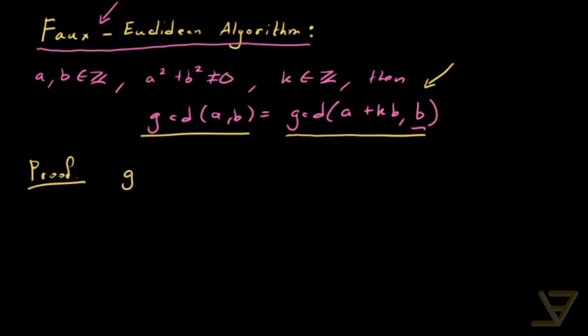So first of all, notice that gcd of a and b divides a and it divides b. Then what that means is that gcd of a and b—I'm going to drop the gcd now since this is pretty standard notation for it, just coordinates (a,b)—it represents the gcd of a and b. That means this divides a plus kb. In fact, it divides any integer linear combination of a and b because of this.